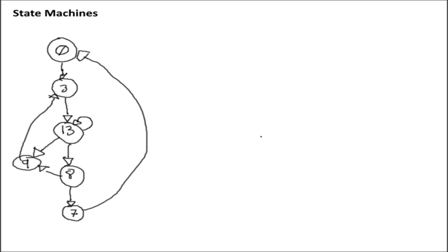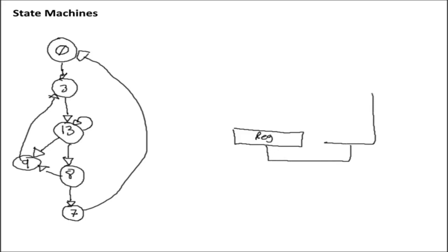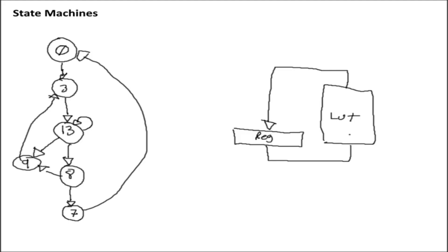It's very simple. If I want to build a state machine of any kind, it always looks basically the same. I start with a register that represents the current state — whatever state the state machine is in is held in this register. The current state is then fed into a lookup table, which determines what the next state is and presents it back to the register. On the next clock cycle, that next state becomes the current state. That's basically it — there's no magic to this whatsoever.